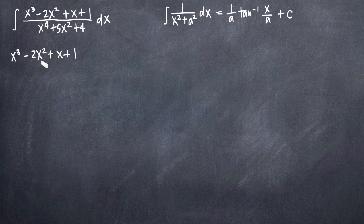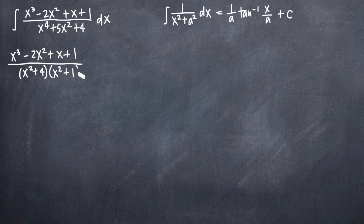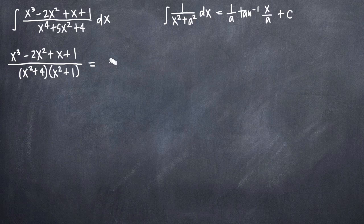So the denominator will factor into the quantity x squared plus 4 times the quantity x squared plus 1. We always want to factor as completely as possible; in this case, this is as far as we can go. Once we've done that, we want to set this equal to our partial fractions decomposition, which we'll put over here on the right-hand side.